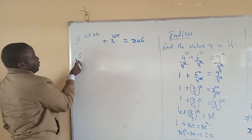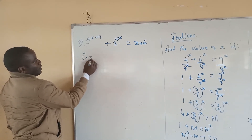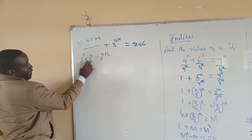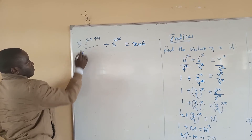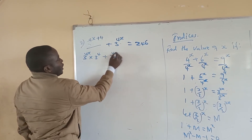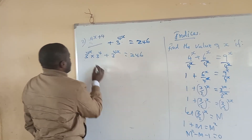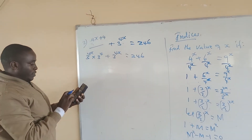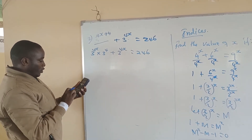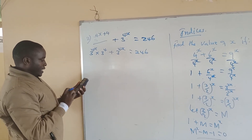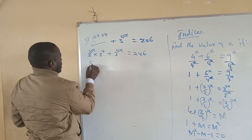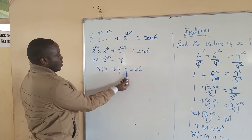Going back to the equation, it becomes 3 to the power 4x times 3 to the power 4, plus 3 to the power 4x, equals 2.46. Now 3 to the power 4 equals 81. So we have 81y plus y equals 2.46, where we let 3 to the power 4x equal y. That gives 82y equals 2.46.